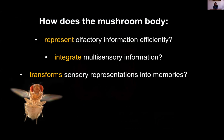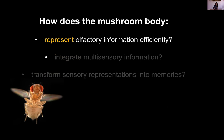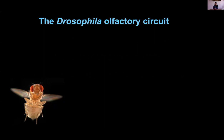Our lab is interested in studying three primary questions regarding the mushroom body and how it represents sensory information. The first question is to use the olfactory circuit as a model to study how sensory information is represented among the Kenyon cells in an efficient manner — that is the topic of today's talk. We are also interested in understanding how it integrates different sensory systems, forming an internal representation using not only the olfactory but also the visual system. Finally, we are interested in how sensory representations are transformed into memory. But for today I'll focus on olfactory information.